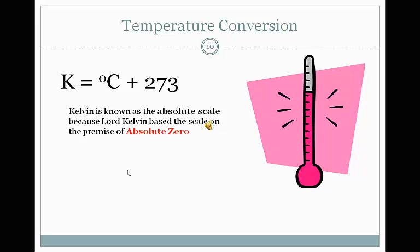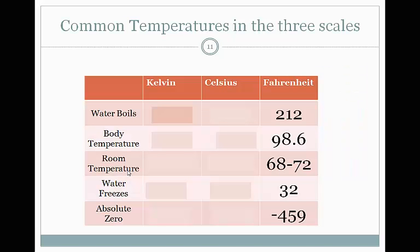In the Kelvin system, zero is called absolute zero. Absolute zero is the temperature at which particles cease to move. Even at zero degrees Celsius or even particles that are within a solid are still moving. They're still vibrating in place. However, once we hit absolute zero, all of that movement completely ceases.